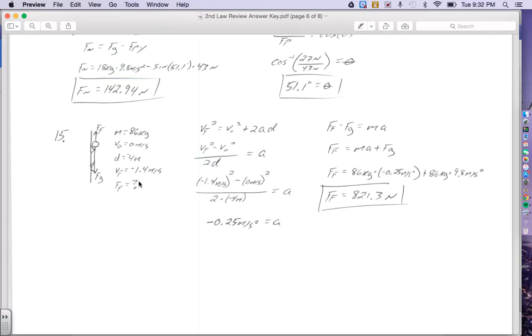When we get a mix of kinematics variables like VF and V0 and D mixed in with forces, we have to see what we're trying to solve for. We're trying to solve for a force. So we're going to need to start with kinematics to find acceleration. I have VF, V0, and D. So I'm going to pick the equation that does not have time, and that would be VF squared equals V0 squared plus 2AD. A little bit of algebra, acceleration equals VF squared minus V0 squared over 2D. VF is negative 1.4 meters per second squared, V0 is 0, that's all over 2 times D, which is negative 4 meters. I get an acceleration of negative 0.25 meters per second squared. The negative is because it's down. He's sliding down the pole, so his acceleration should be downward.